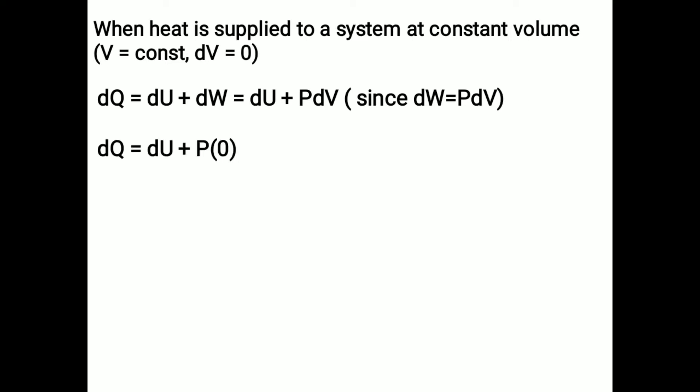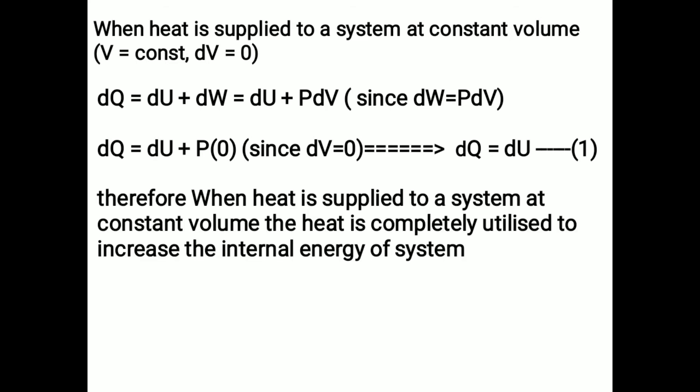Therefore, dq equals du plus p into zero, since dv equals zero. Therefore, dq equals du (equation 1). When heat is supplied to a system at constant volume, the heat is completely utilized to increase the internal energy of the system.